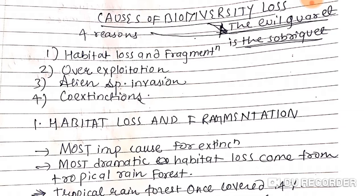So what are they? The four causes are: habitat loss and fragmentation, over-exploitation, alien species invasion and co-extinction.